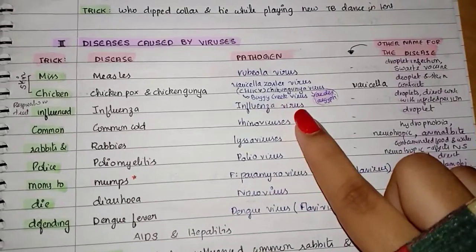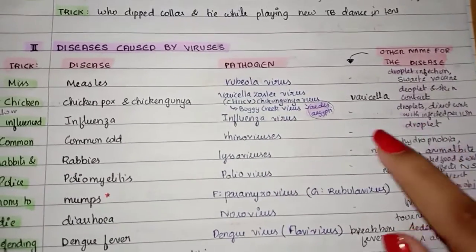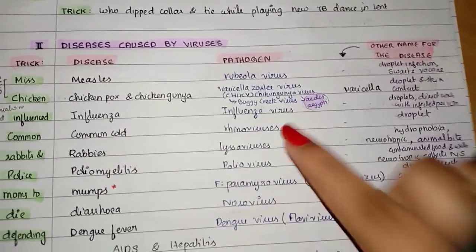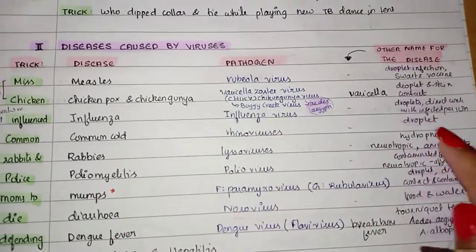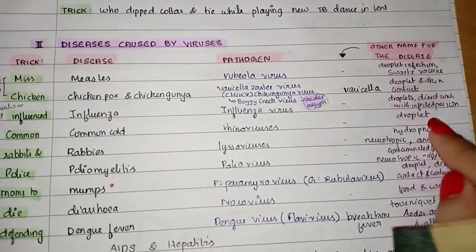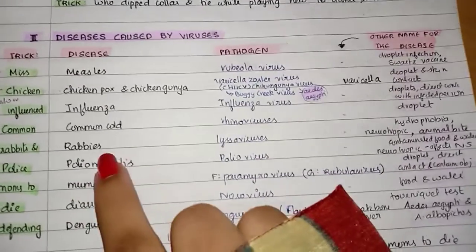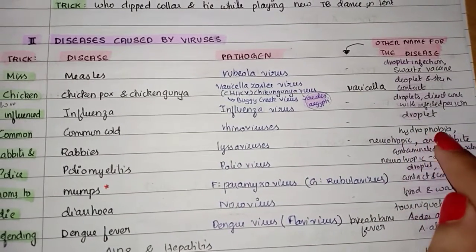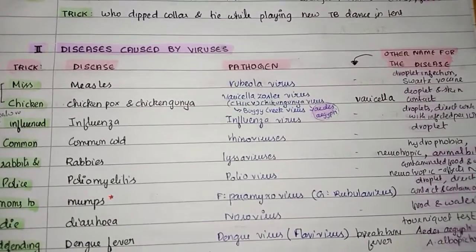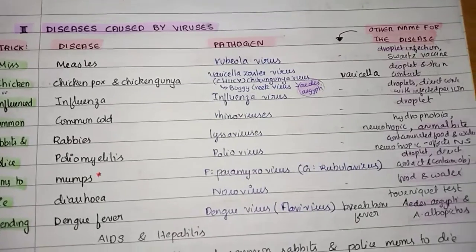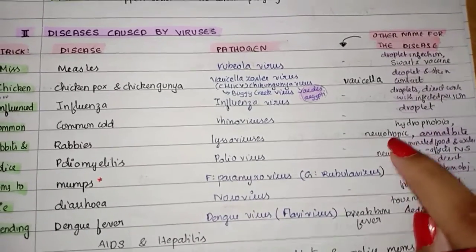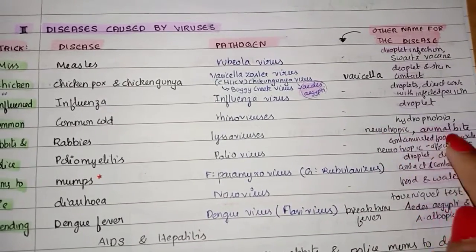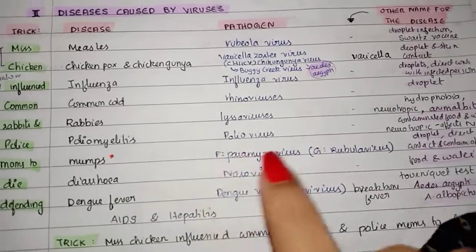For influenza, the pathogen is influenza virus; spread by droplets and direct contact with an infected person. For common cold, the pathogen is rhinovirus; spread by droplet. For rabies, the pathogen is Lyssavirus; other name is hydrophobia — because the infected person develops fear towards water. It is neurotropic, meaning it affects the nervous system, and spread through animal bite.